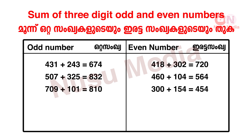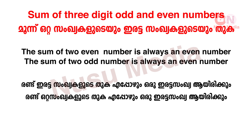Now let's add three-digit even numbers: 418 plus 302 is 720. 460 plus 104 is 564. 300 plus 154 is equal to 454. The sum of two odd numbers is always an even number.